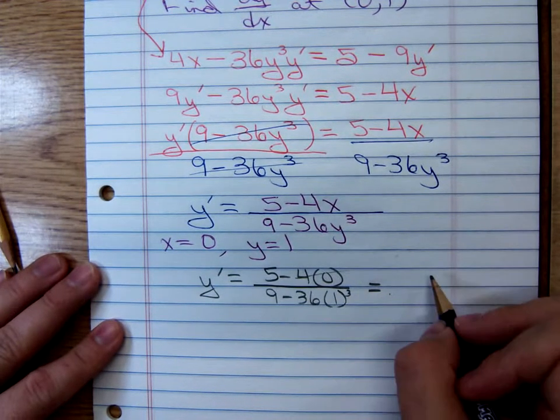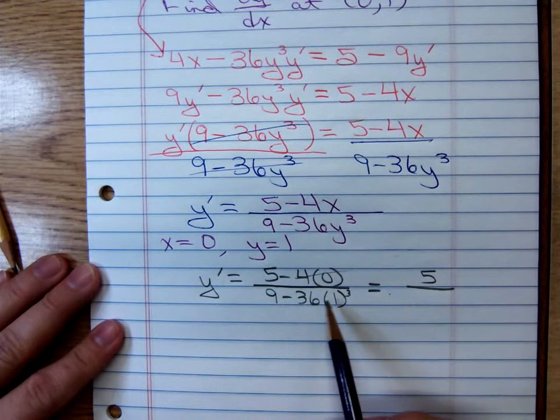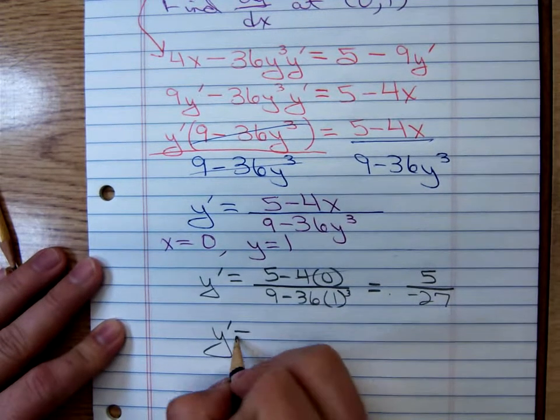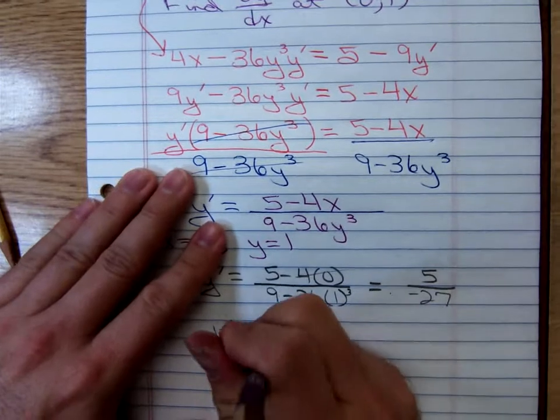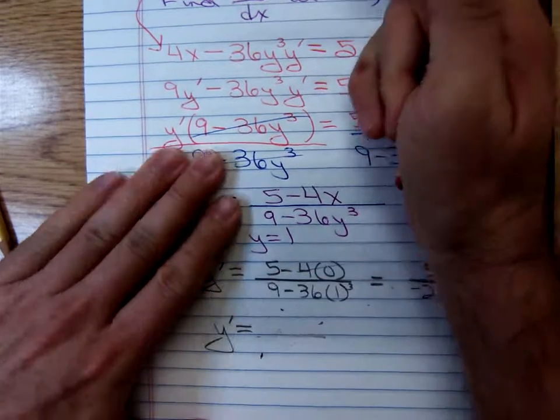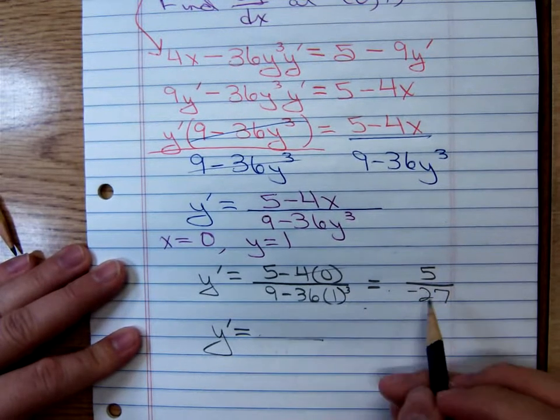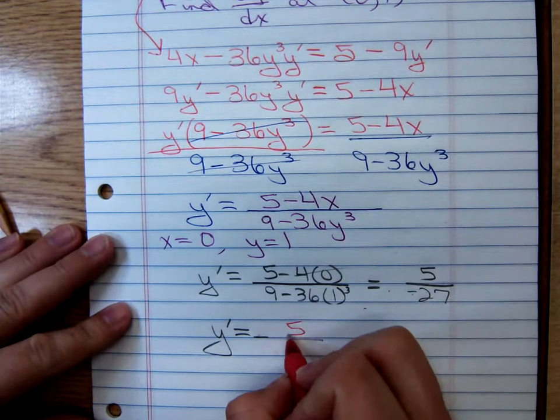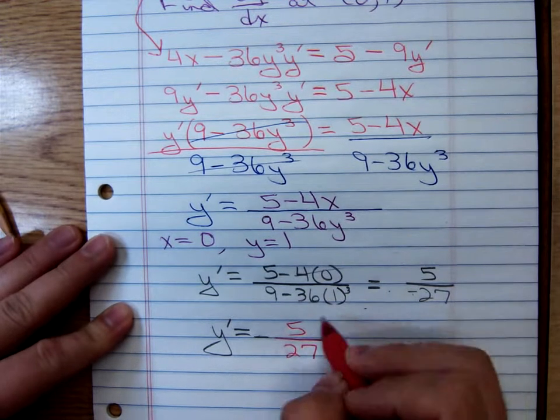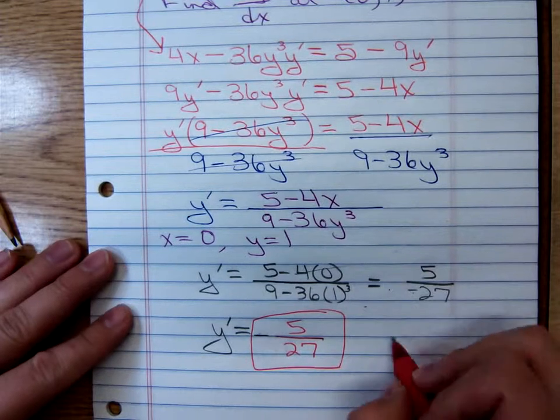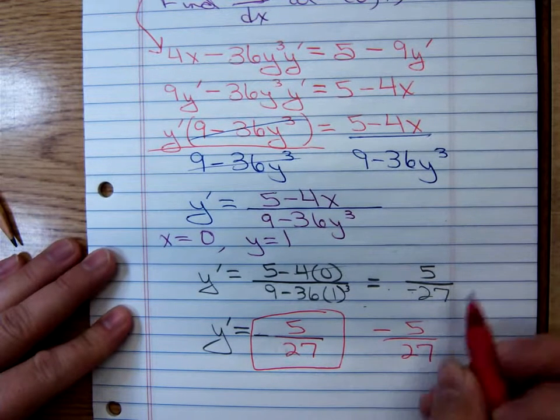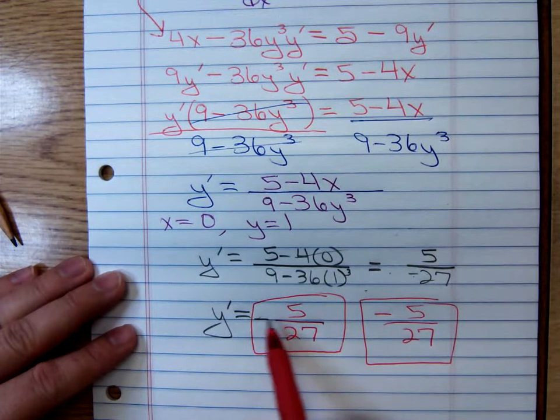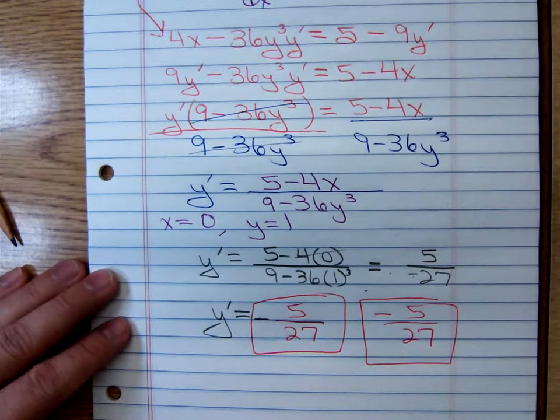When you do that, you'll get, y prime equals 5 minus 4 times 0 all over 9 minus 36 times 1 cubed. Well, that's going to be a 5 over a? That's a 9 minus 36. That's just a negative 27. So, the value of the derivative at the ordered pair, the ordered pair 0, 1 is the fraction positive, I don't like that negative in the denominator. So, it's going to be a negative 5 over 27. Is that negative showing clearly? It's a negative 5 over 27 there. I think that's more legible. That thing there looks just like part of the fraction bar.